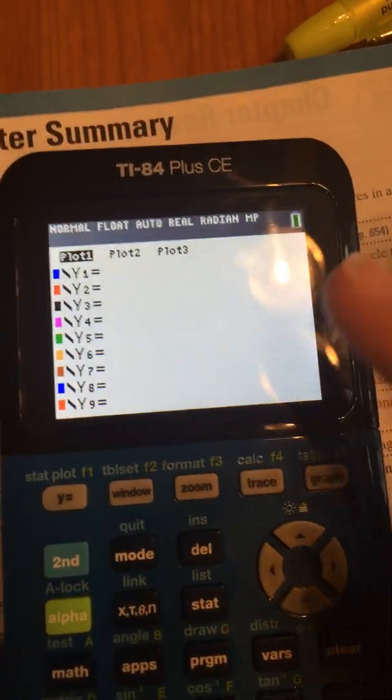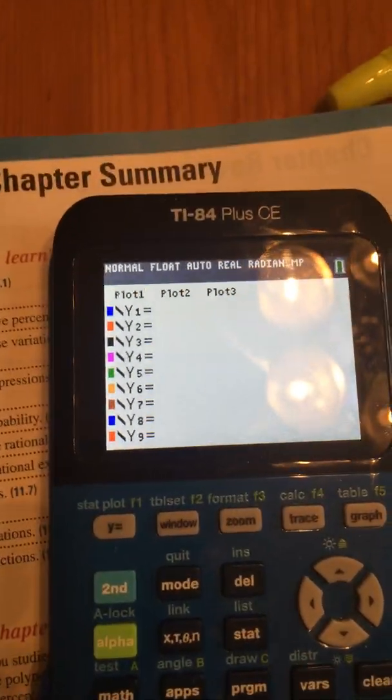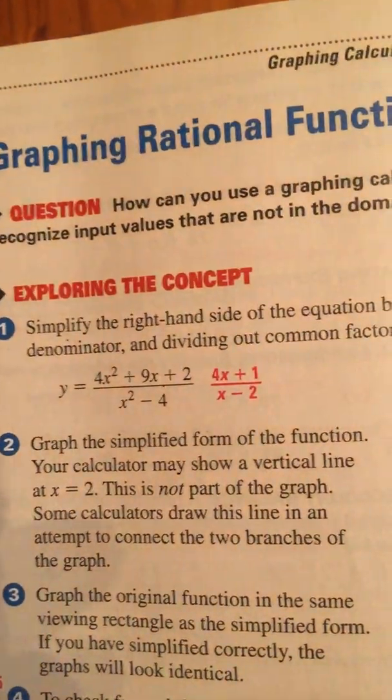So first of all, we turn on our calculator right here. We go to y equals. Do you see how my plot one's on? I need to turn that off, or we're going to get weird little dots. So I turn that off, I go down, and I'm going to put in these equations.